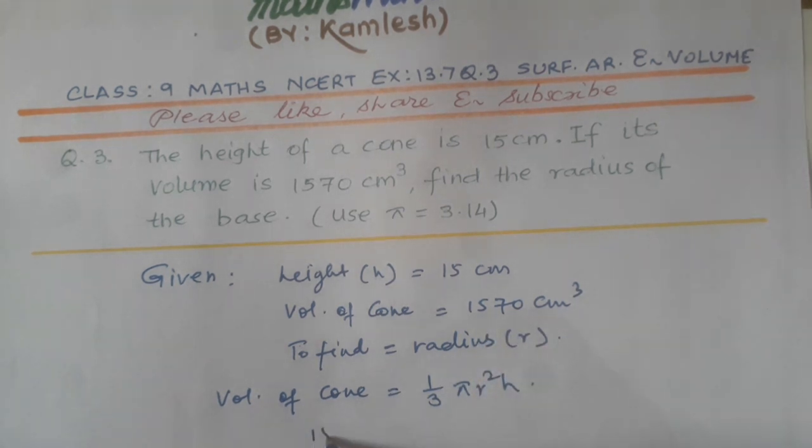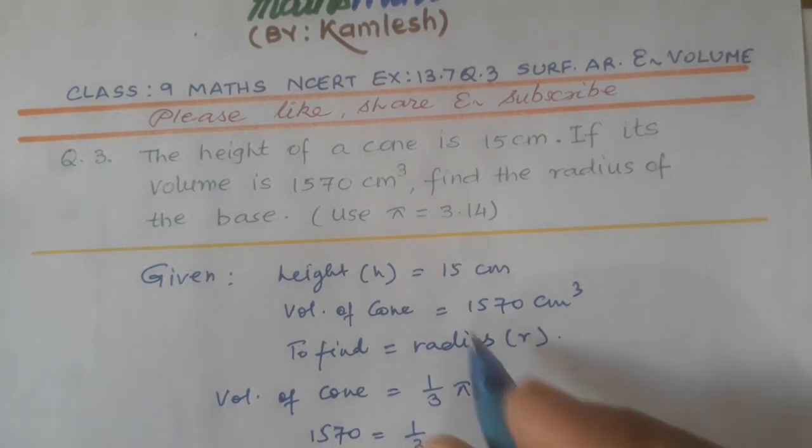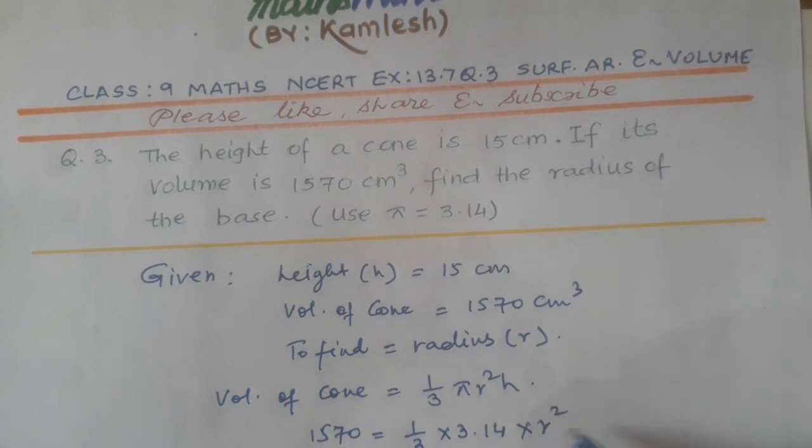Volume of cone is given as 1570, so we'll put it here: 1570 = 1/3 × π value is 3.14 × r² (we need to find r) × h we have is 15.